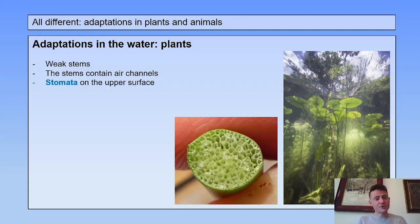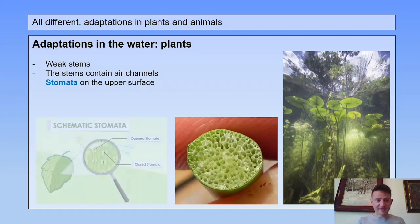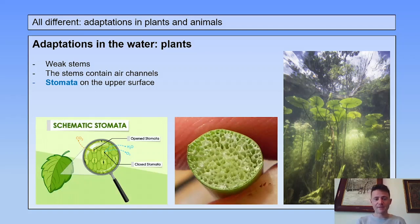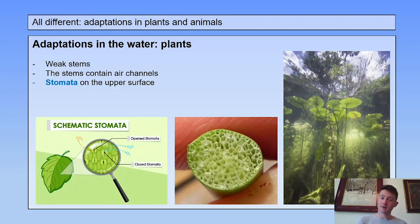The stomata are on the upper surface of the leaves. Recall from the previous lesson — the stomata are these little mouths in the surface of the leaves, and this enables the plant to breathe in carbon dioxide and breathe out oxygen.